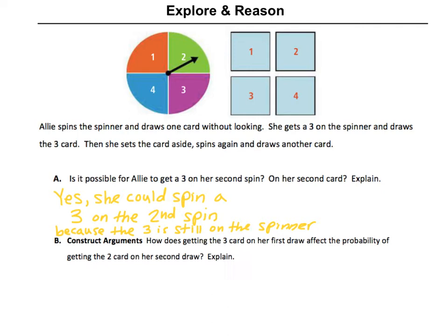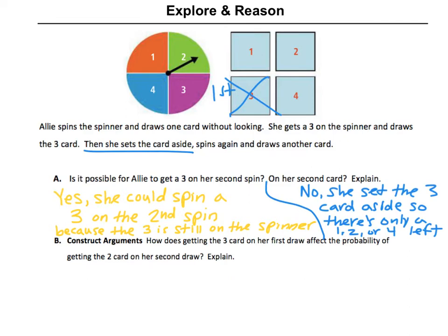With the cards, things are a little bit different. She spun a 3 on the spinner and drew the 3 card, then set the card aside. So after she draws out the 3, she takes that card and sets it aside. Could she get a 3 on her second draw? No — she just set it aside. There's only a 1, 2, or 4 card left, so it's impossible for her to get the 3.